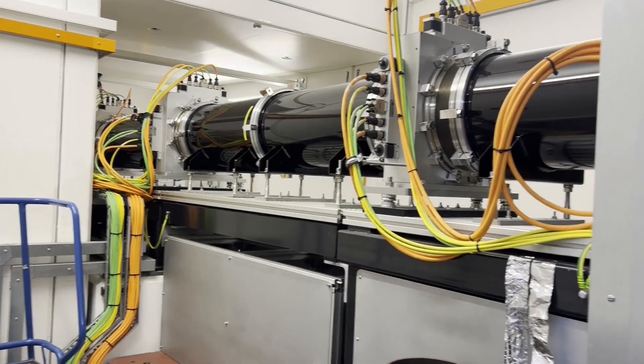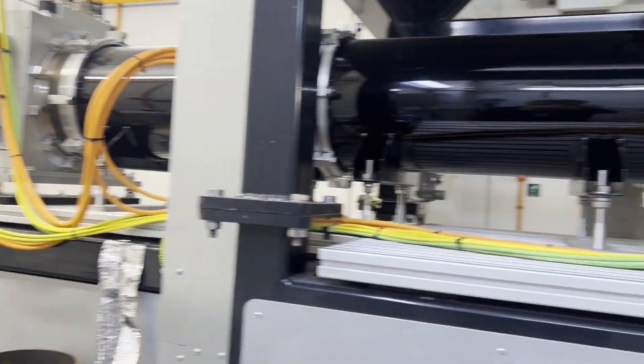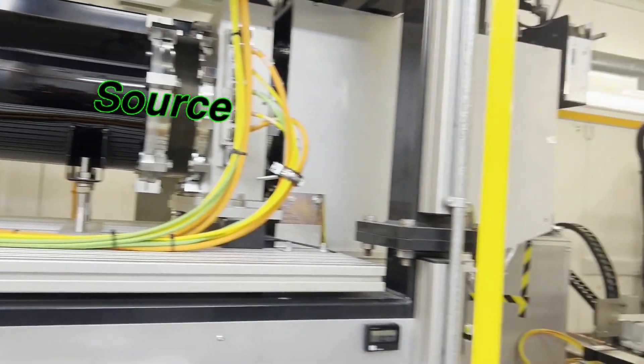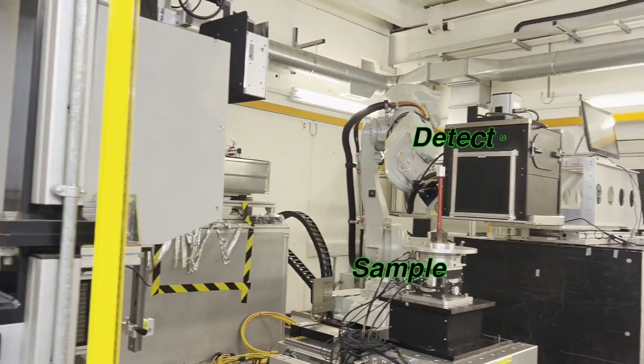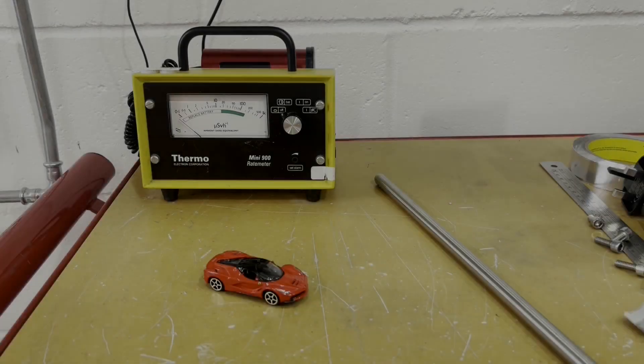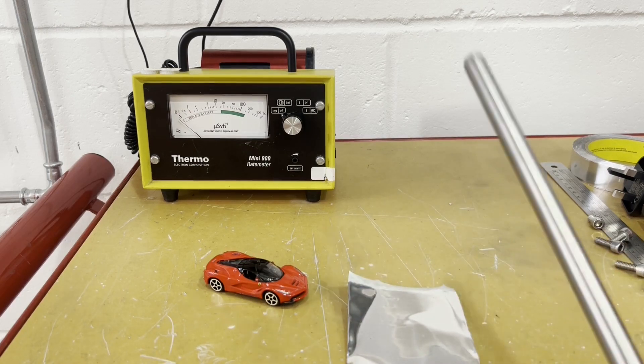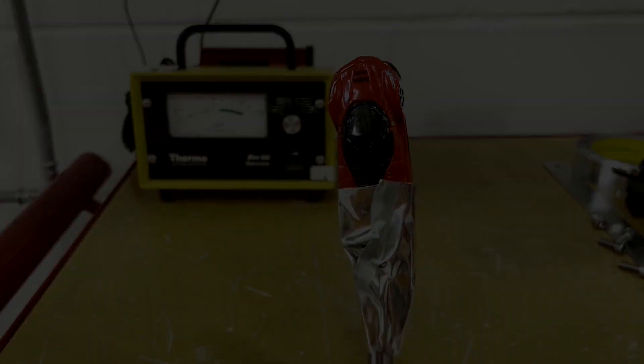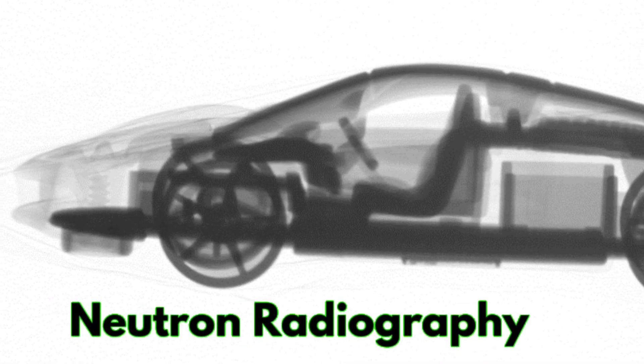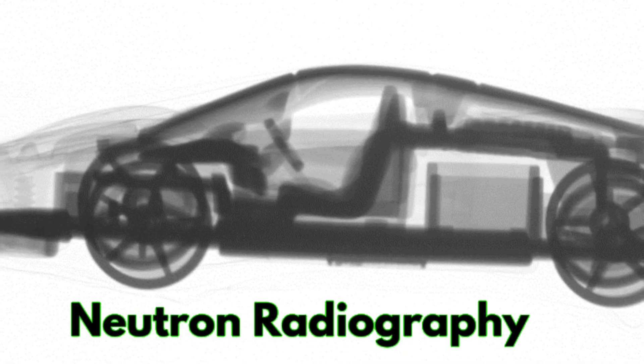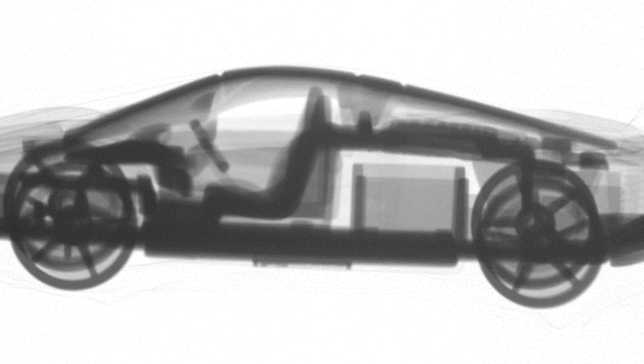But we can break it down into the fundamental components. You've got the source, the sample, and the detector. And in this case, the sample was the Ferrari. Once it was mounted in place between the source and the detector, we're able to produce neutron radiographies. And as you can see in these pictures, the darker areas are the little plastic bits, like the wheels, and the seat, and even the steering wheel.